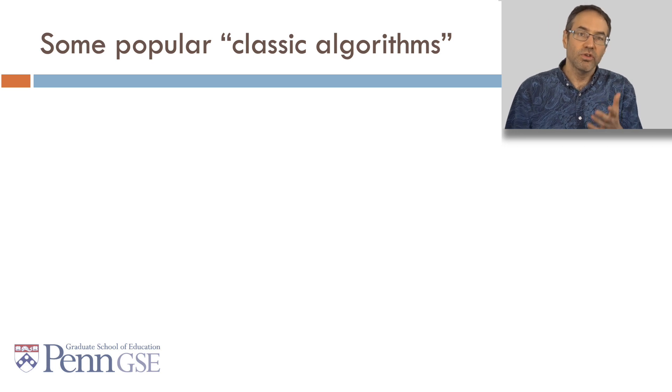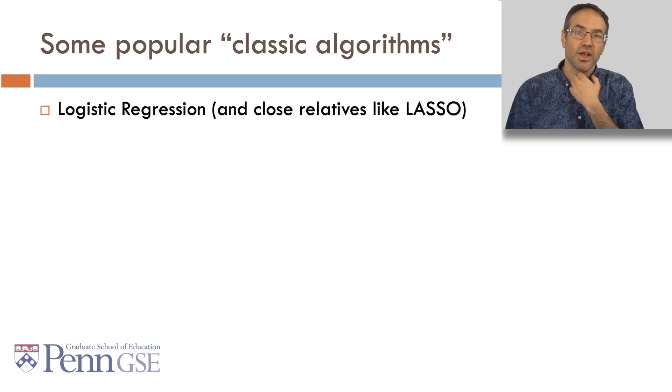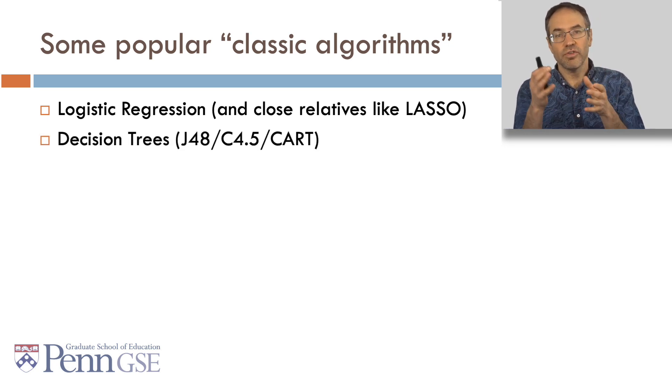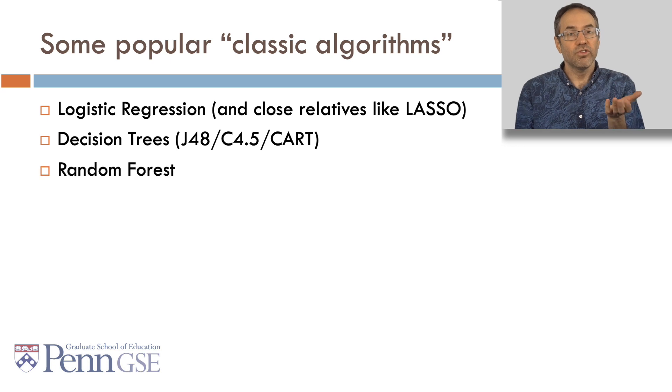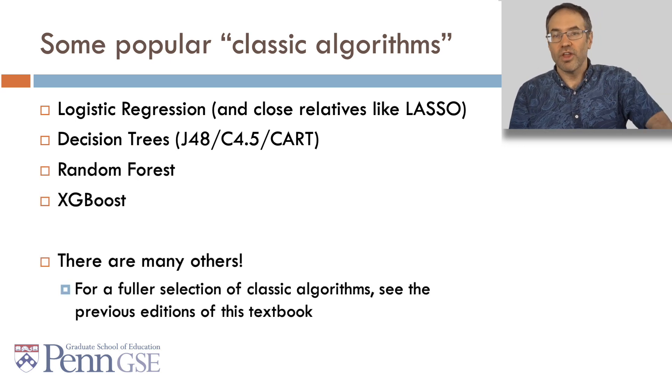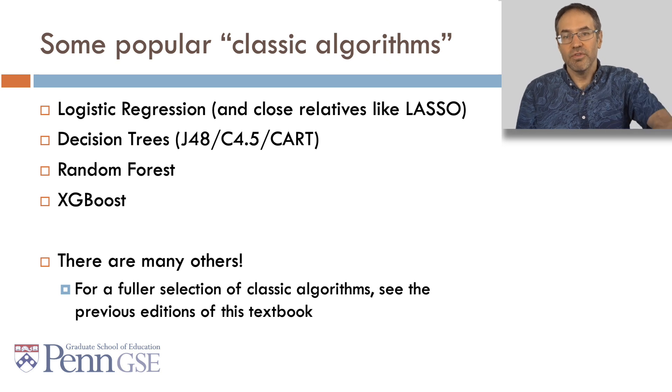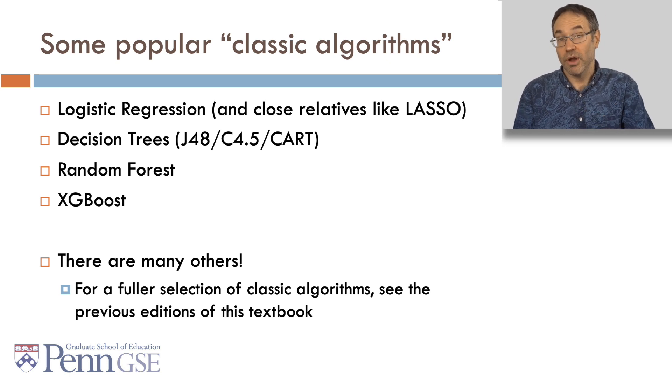Some popular classic algorithms include logistic regression and close relatives of it like Lasso, decision trees, and there's a few different decision tree algorithms, it doesn't really matter, random forest, XGBoost, and there are a whole lot of others. For a fuller selection of classic algorithms, see the previous editions of this textbook where I talk about a bunch.